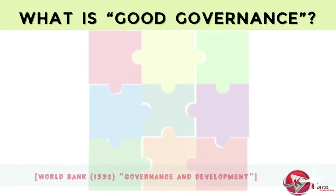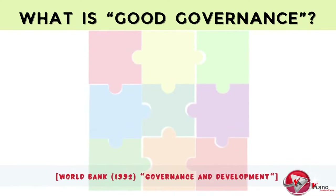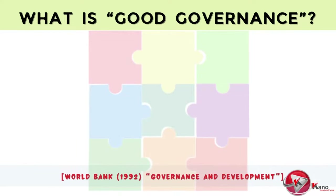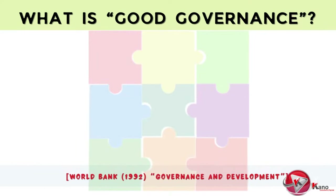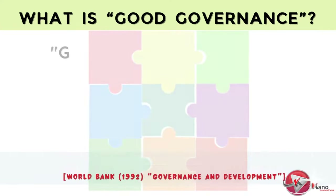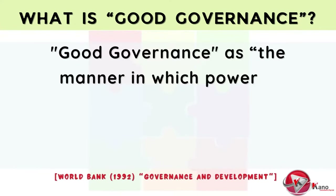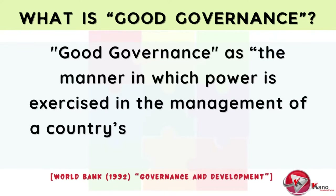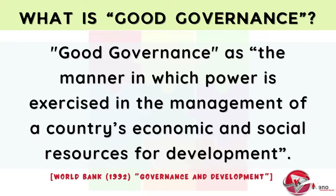In 1992, the World Bank released a report entitled Governance and Development, which set out its definition of good governance. The World Bank defined good governance as the manner in which power is exercised in the management of a country's economic and social resources for development.